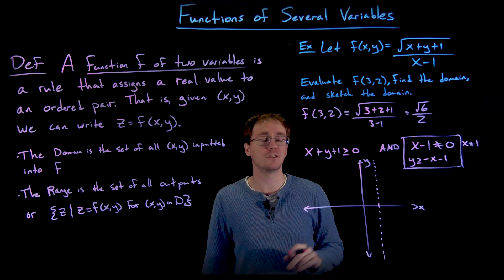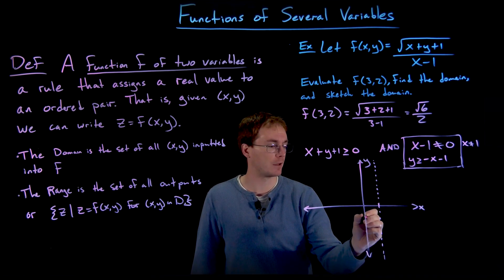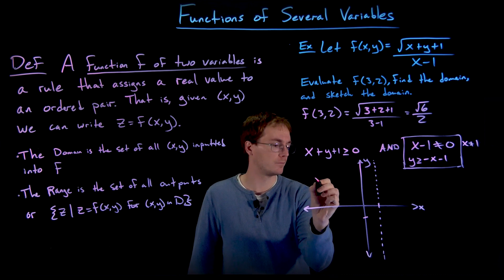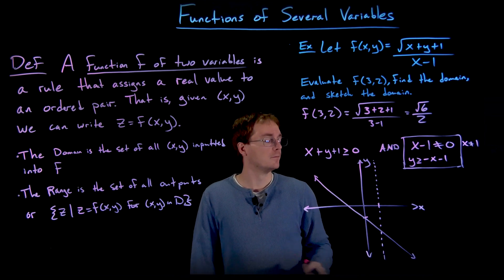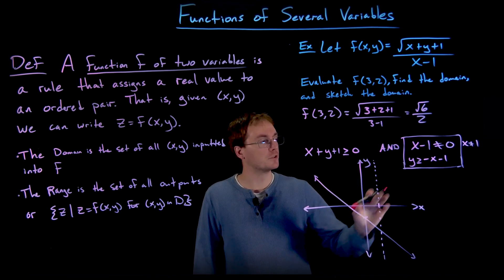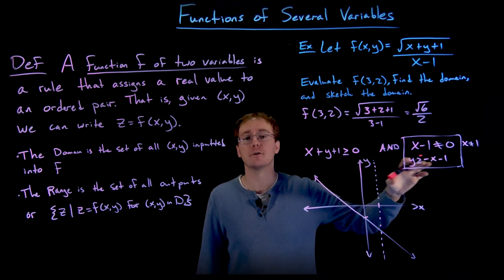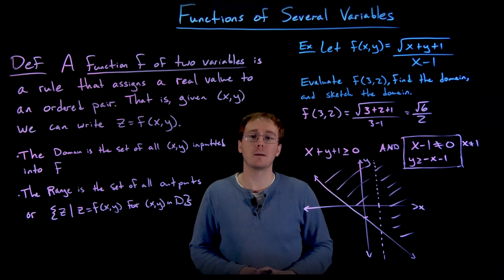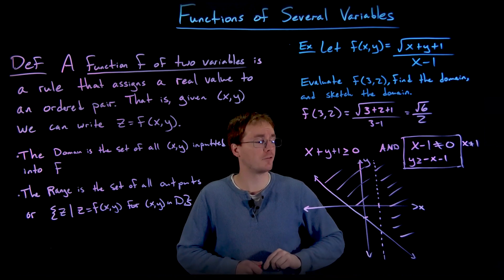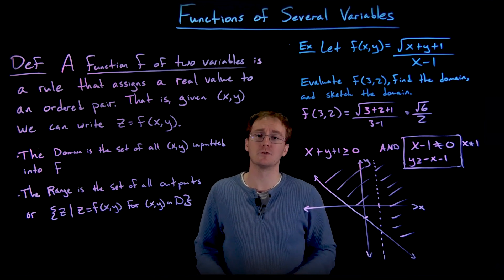To graph the inequality y is greater than or equal to negative x minus one, we first graph the boundary line y equals negative x minus one, which has a y-intercept at negative one and a slope of negative one. The inequality requires all points above or on this line. This gives us a visual representation of the domain of this two-variable function — all points above this line where x is not equal to one.